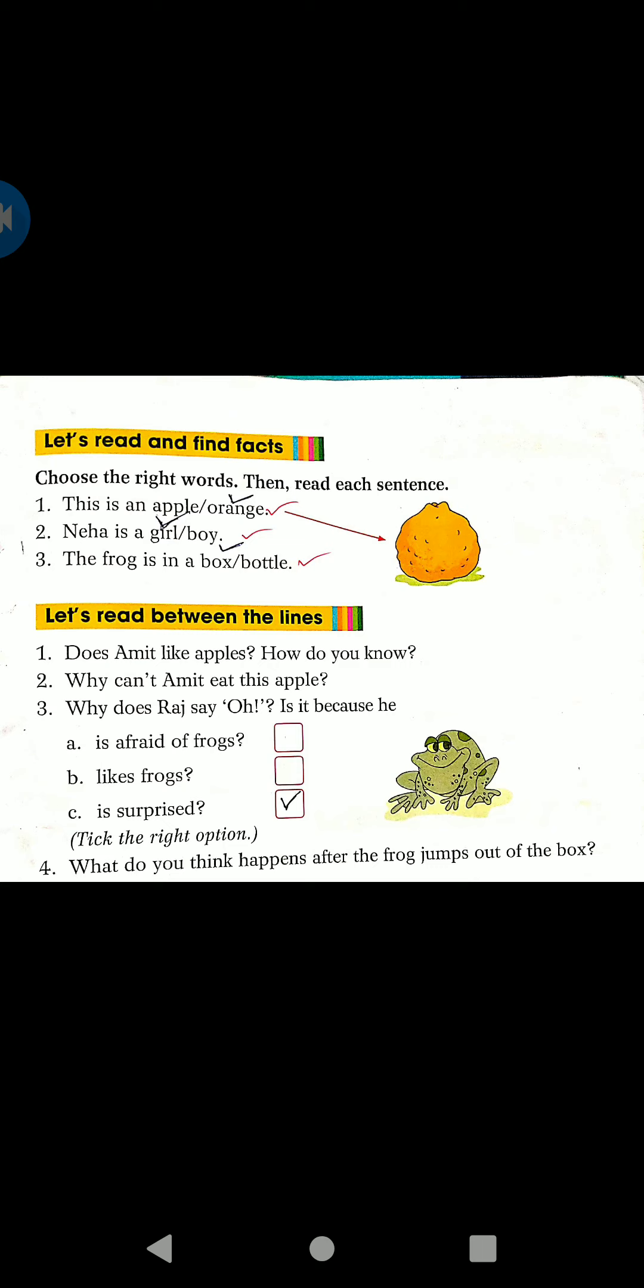For the first question, a picture is given as a hint. I am going to read it, kindly follow. Put your index finger on question number 1 and follow as I am reading. This is an apple or orange.